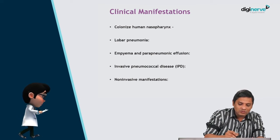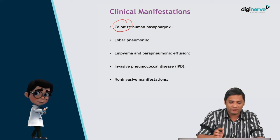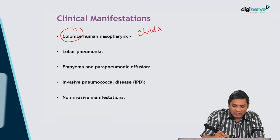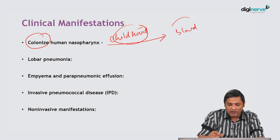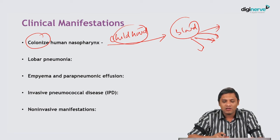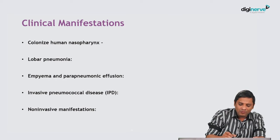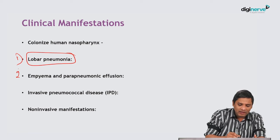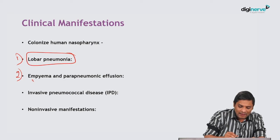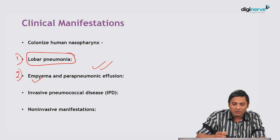Now we will discuss the clinical manifestations. Pneumococcus colonizes the nasopharynx and upper respiratory tract, and colonization usually occurs in childhood. From the nasopharynx, the organism spills over to blood and from blood goes to various organs to produce manifestations. The most important manifestation is lobar pneumonia.